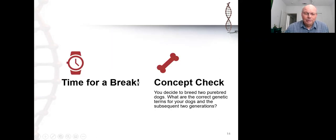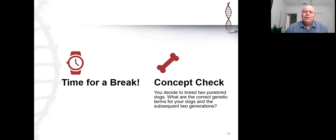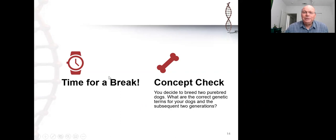So we've talked about all of that, and now it's time to take our first break. Here is the concept check question: You decide to breed two purebred dogs. What are the correct genetic terms for your dogs and the subsequent two generations? I'll see you back here after the break with the answer.